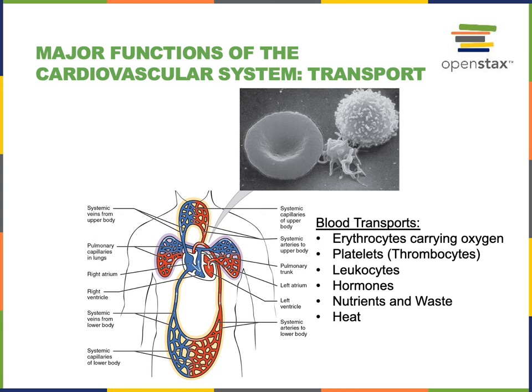As cells produce waste, this waste can be transported in the blood to organs that can help remove waste from the body. For example, the kidneys can help to remove waste from the body and produce urine to eliminate that waste as we excrete the urine out of the body.